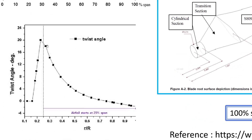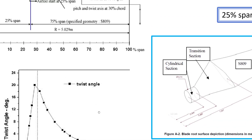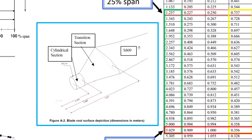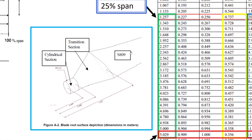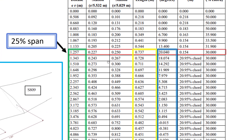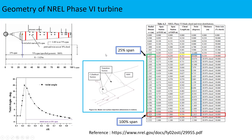The twist angle varies according to the graph shown here and is also given in this table. We have three sections: the blade itself, the transition region, and the support or cylindrical region. We will use this table, import the data into SOLIDWORKS, and design the turbine based on the data given in the NREL report.